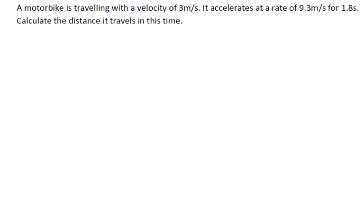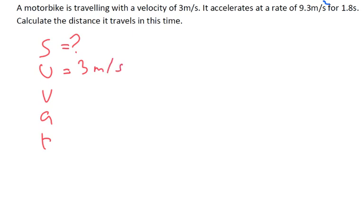Next up: a motorbike is traveling with a velocity of 3 meters per second. It accelerates at a rate of 9.3 meters per second squared for 1.3 seconds. Calculate the distance it travels in this time. So we've got s, u, v, a, and t. We want to know the distance traveled — question mark. The initial velocity is 3 meters per second, final velocity we don't know, the acceleration is 9.3 meters per second squared, and the time is 1.8 seconds.